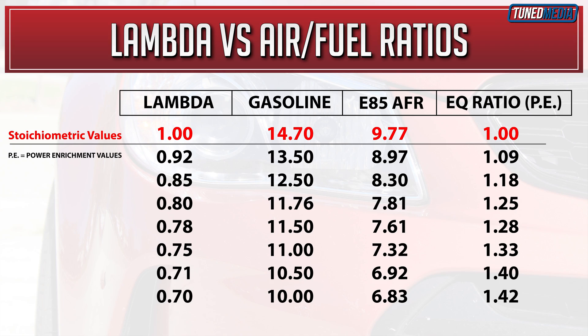GM vehicles typically don't use Lambda at all — they use EQ ratio for power enrichment. With EQ ratio, those numbers start at 1 and work their way up, and they're the opposite of Lambda. Looking at the chart: a Lambda of 1 is the same as gasoline at 14.7, the same as E85 at 9.7, and the same as an EQ ratio of 1.0. A Lambda of 0.85 means 12.5 AFR on gasoline, 8.3 AFR on E85, and an EQ ratio of 1.18. Once you start thinking in Lambda, it doesn't matter what fuel you have — you just say I want to target 0.85, put in an EQ ratio of 1.18, and it's correct. But if you think in AFR and the concentration of alcohol changes, you would have a problem.